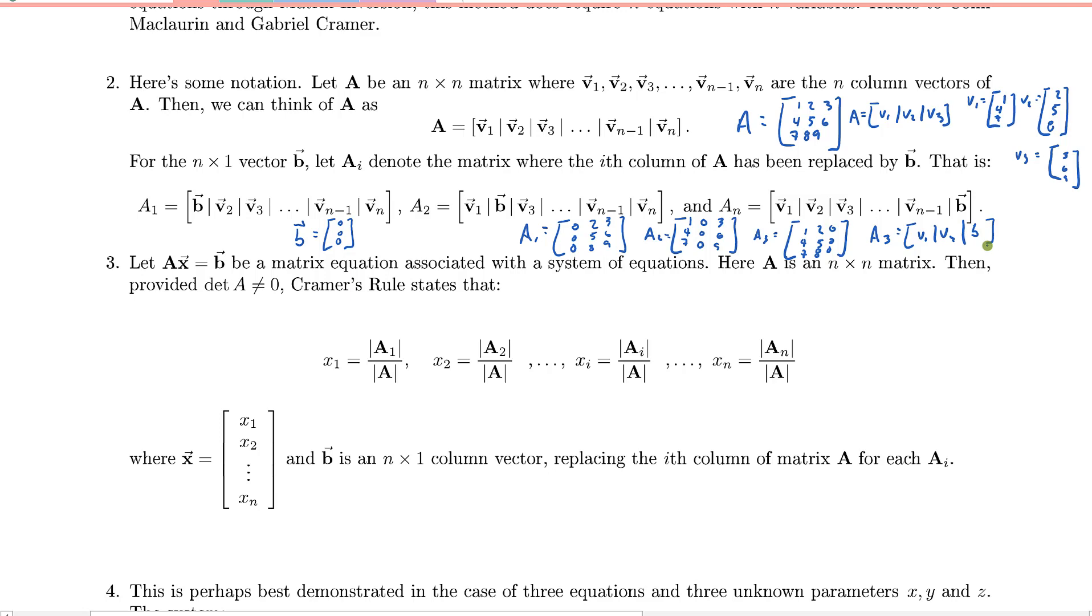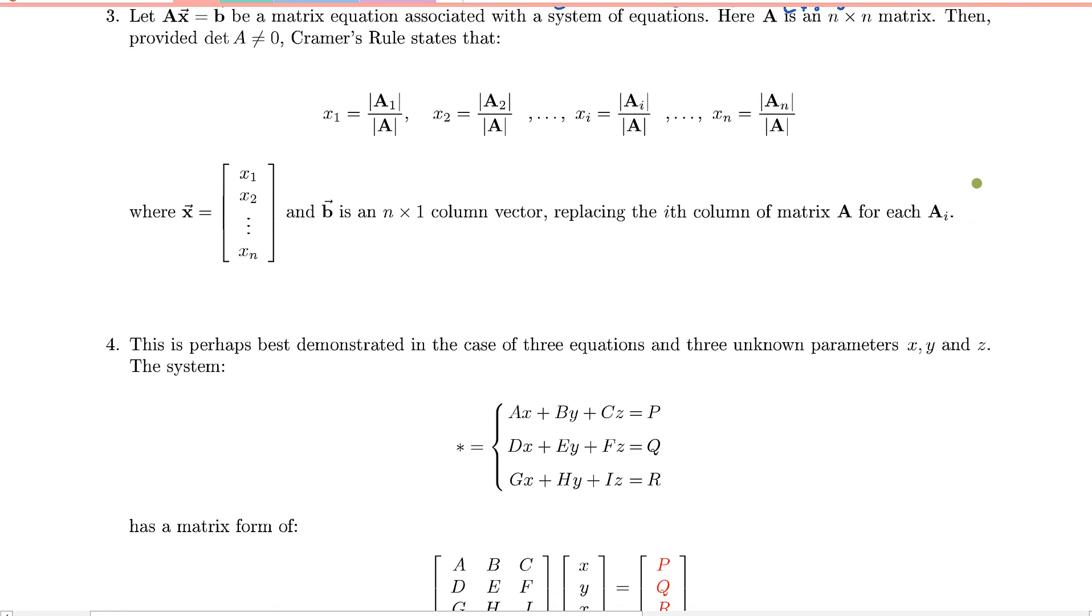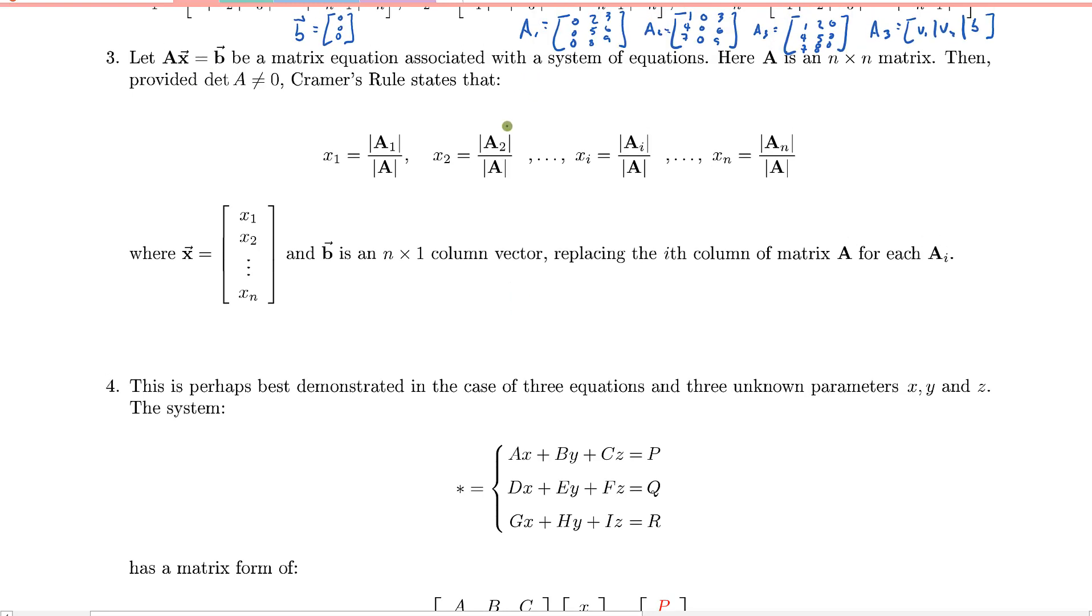OK, so now that we've got this notation down, stating Cramer's rule is actually fairly simple. It says, let's consider this matrix equation here, AX equals B, and usually we think of that being associated with a system of equations, and in this case, we need A to be an n by n matrix, and provided the determinant of A isn't 0, then we can solve for each of the individual values in our variable matrix. So X1 is this matrix A1's determinant divided by the determinant of A.